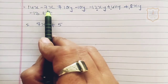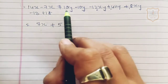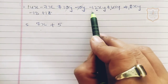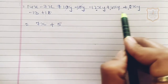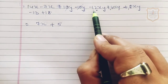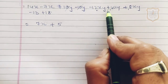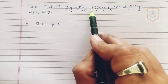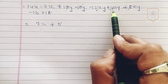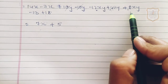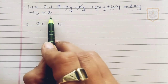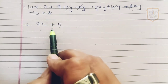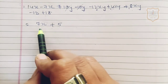14x minus 7x gives 7x. Plus 10y and minus 10y cancel to zero. For the xy terms: minus 12xy plus 4xy gives minus 8xy, and minus 8xy plus 8xy gives zero. Then minus 13 plus 18: 18 minus 13 is 5, and 18 is greater so the sign is plus. The answer is 7x plus 5.